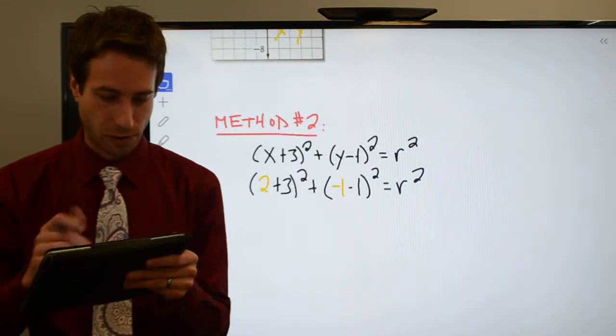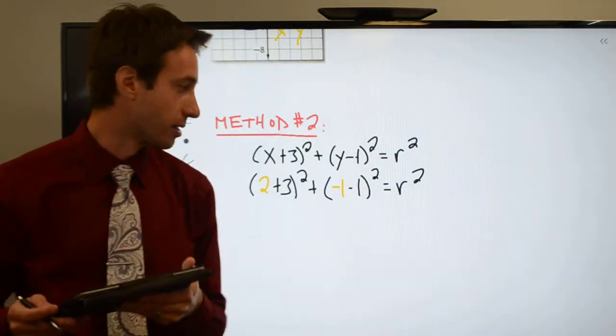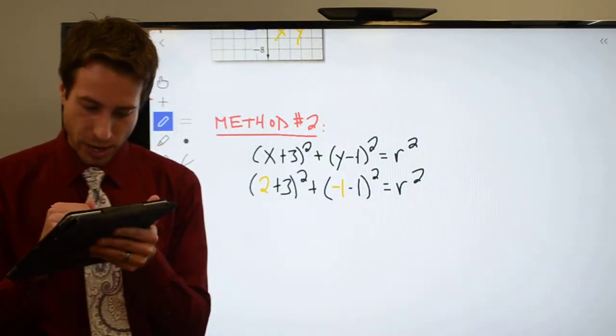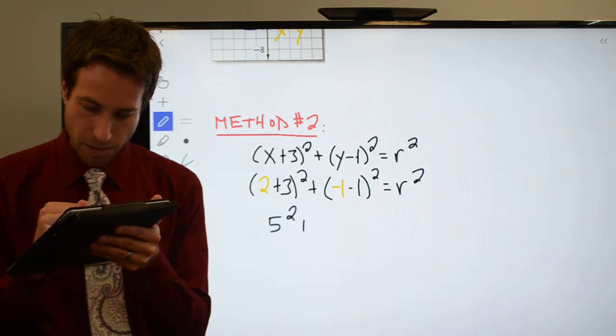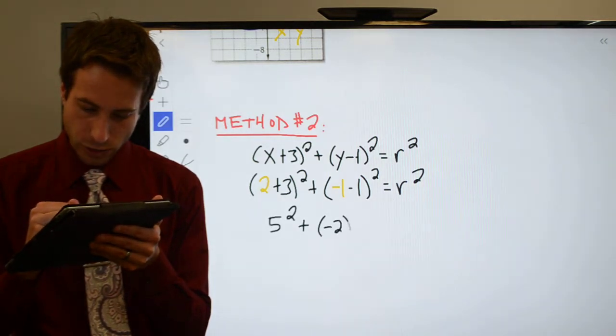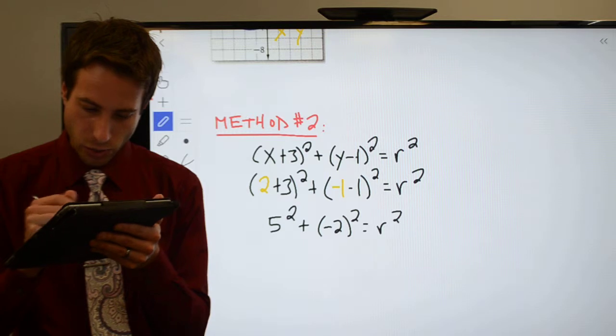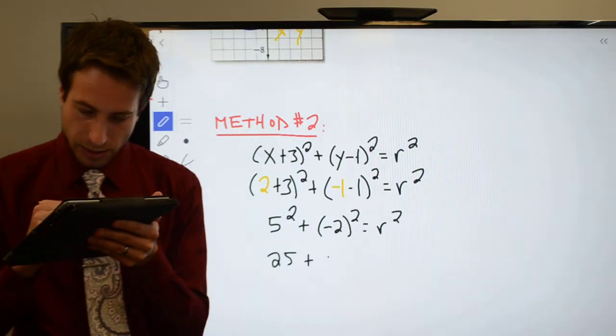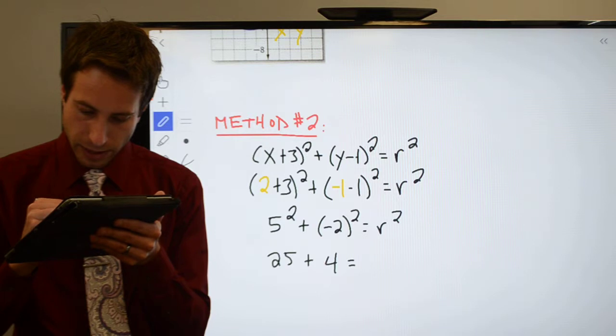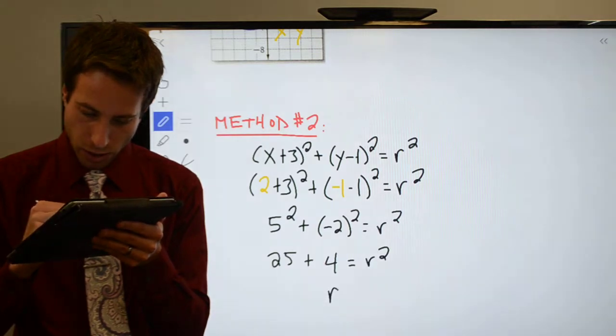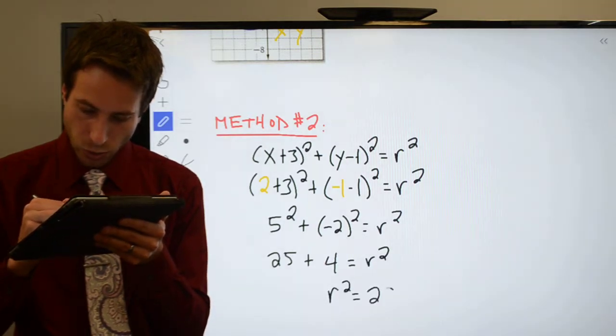Anyway, algebra is beautiful. I love it. So awesome. Anyway, here's what you wind up with. You wind up with 5 squared plus negative 2 squared is equal to r squared. That's 25 plus 4 is equal to r squared. So, r squared is equal to 29.